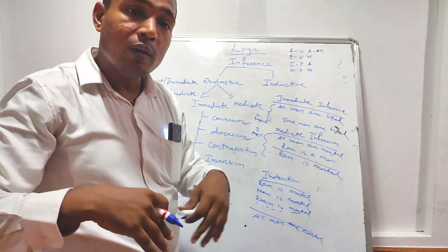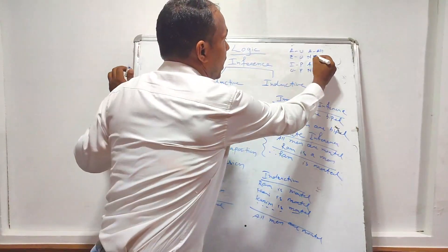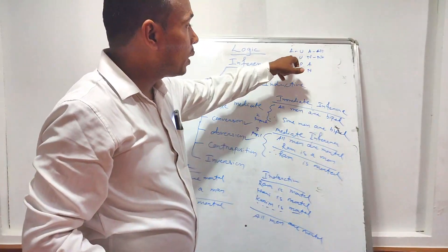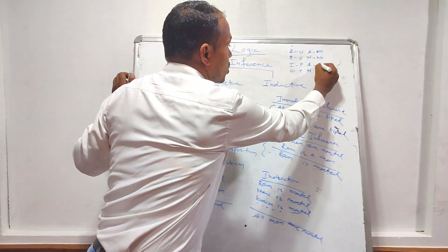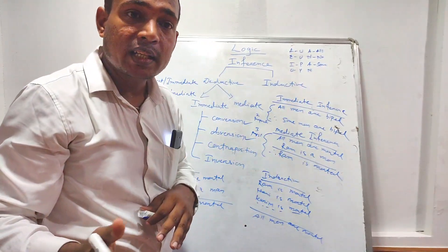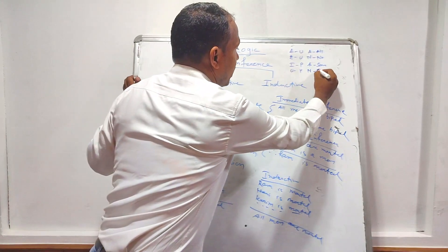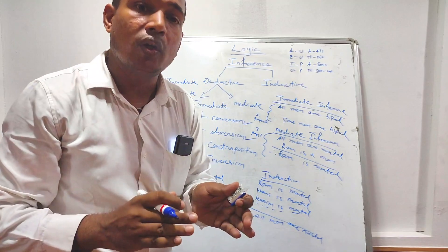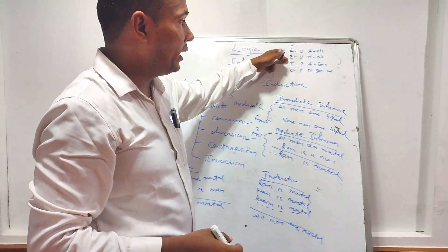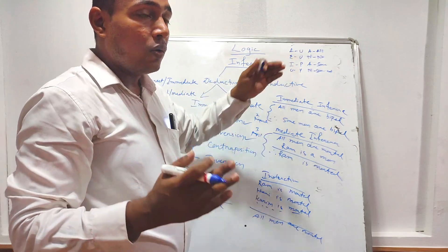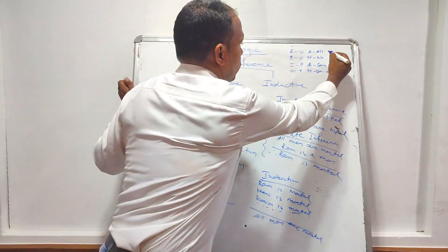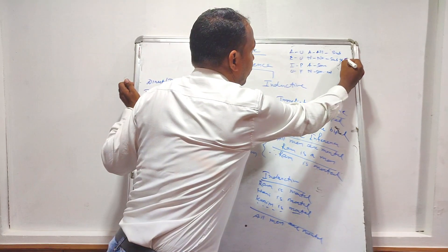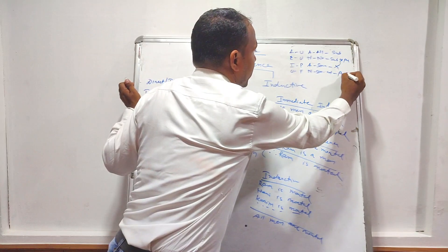For example: A proposition — 'All men are mortal' or 'All men are bipeds.' E proposition — 'No man is immortal.' Some men are not honest is an O proposition. In terms of distribution, for an A proposition the subject is distributed; for an E proposition both subject and predicate are distributed.